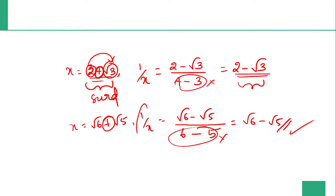You then get the 1 by x value. So that leads to x square plus 1 by x square. We have to proceed. I hope the concept is clear. Let us get into the question.